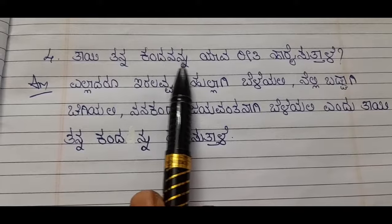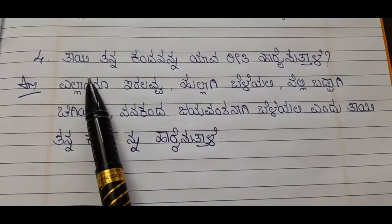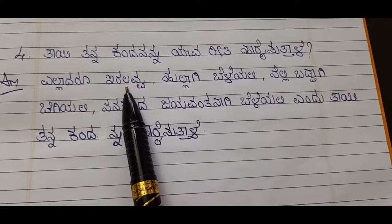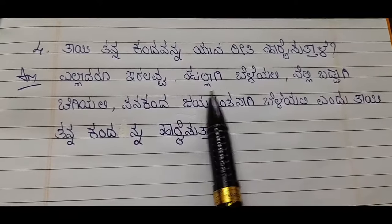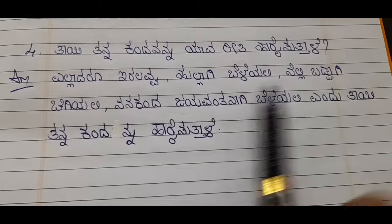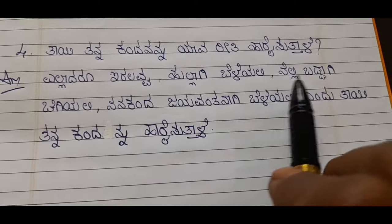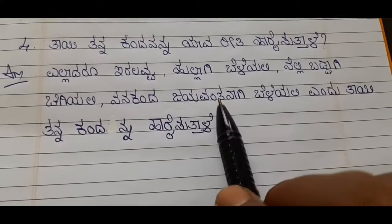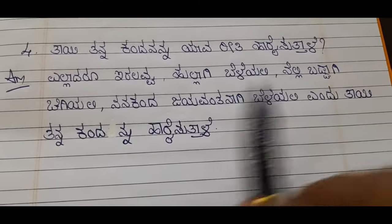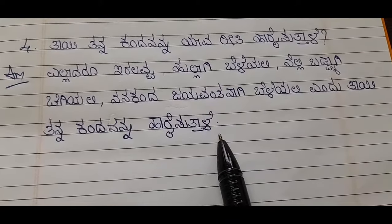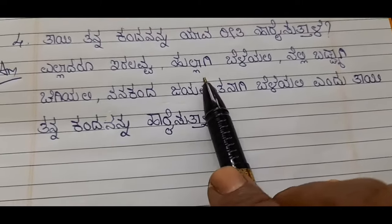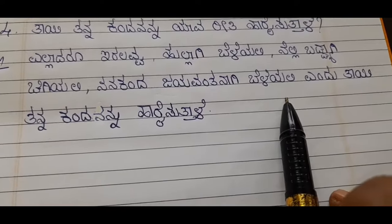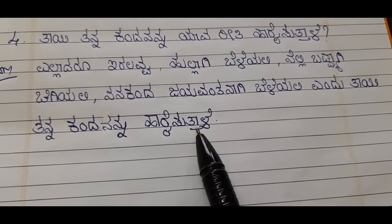Fourth question: Thai thanna kandana nannu yavariti harayisutthale — how does the mother bless her child? Yelladar iralavva — wherever you are. Hullaghi beleli — grow like grass. Nillibadhyagi chigiyali — grow like the gooseberry tree. Nanakanda jayavantanagi beleli — let my child grow as a victorious person. Indu thai thannakandana nannu harayisutthale.